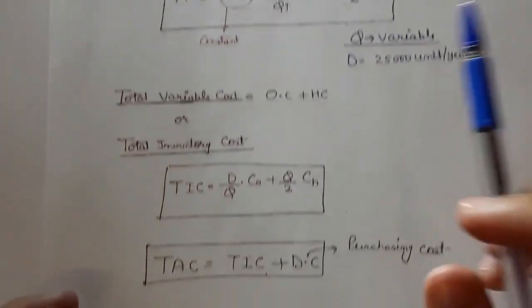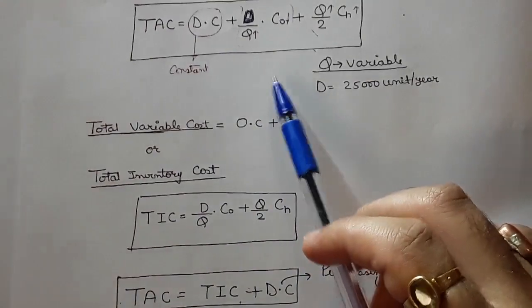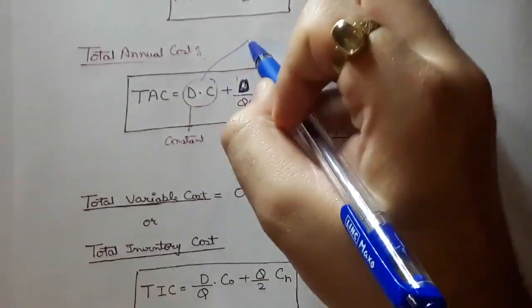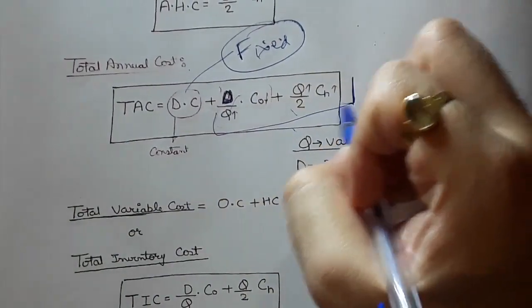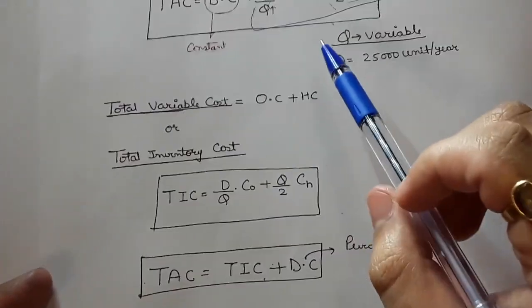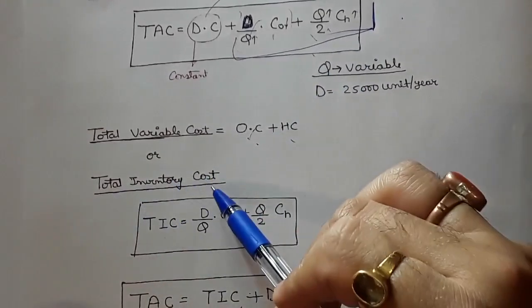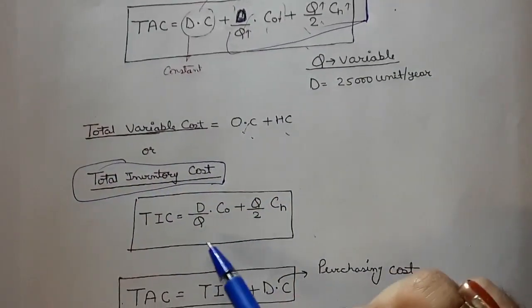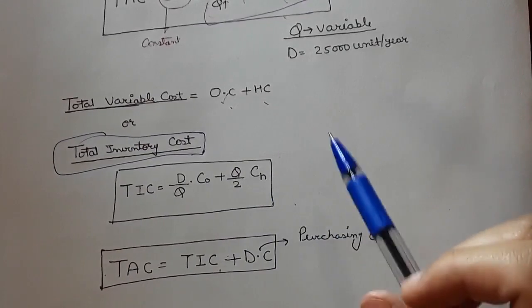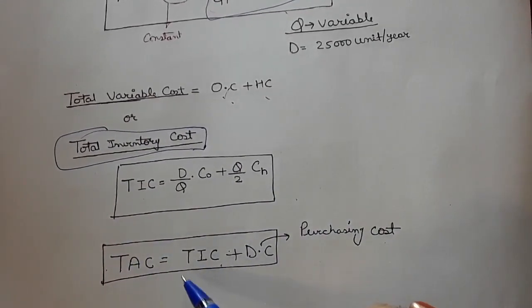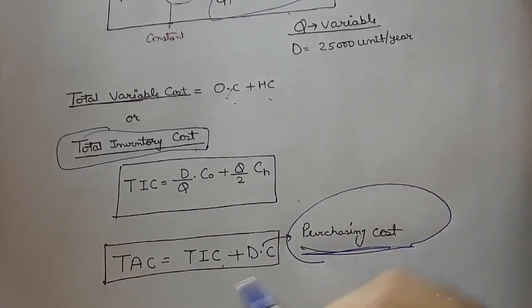If we remove the purchasing cost (D × C) from the total annual cost — since it is a fixed/constant part — then the total inventory cost (variable part) = (D/Q)·C₀ + (Q/2)·CH, which includes ordering and holding costs. Adding purchasing cost back gives total annual cost. Differentiating this gives the minimum, which is the EOQ.